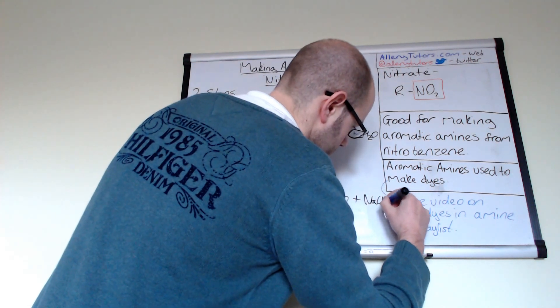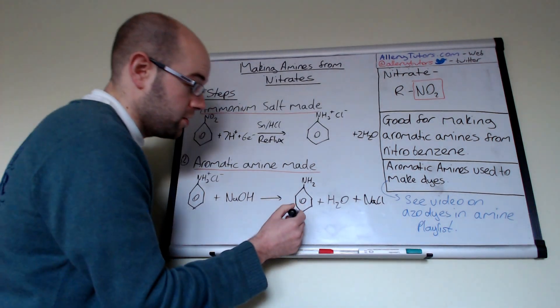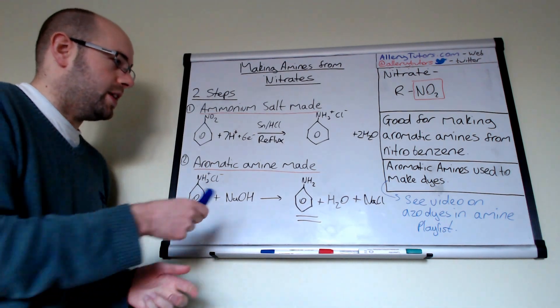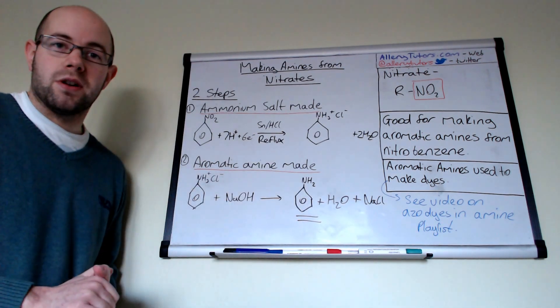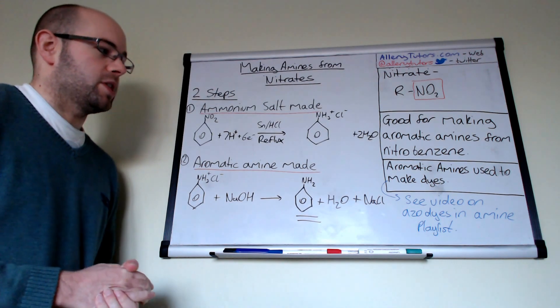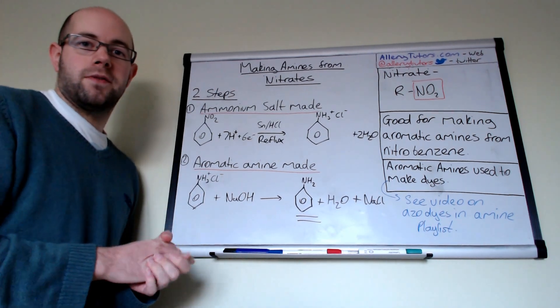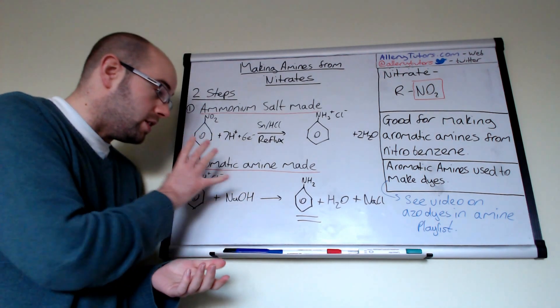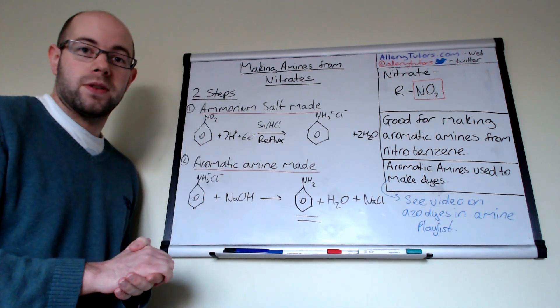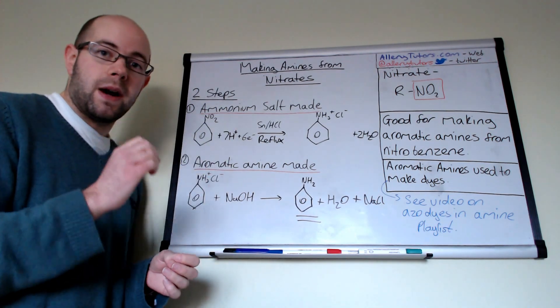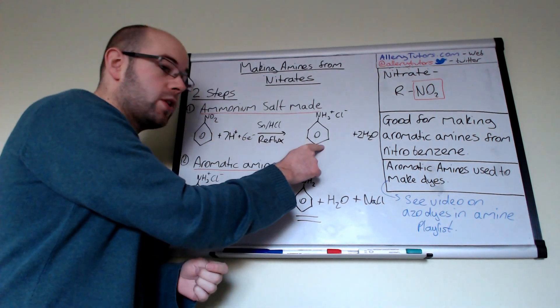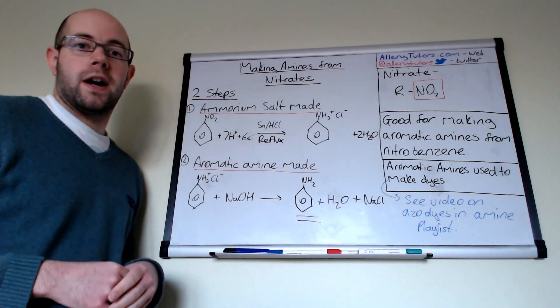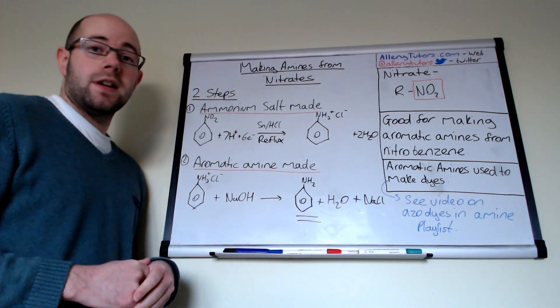And there is your phenylamine, and you've made an aromatic amine. Like I say, these are very good for making azo dyes, and there will be a video on that as well, so just check out the playlist and you can find the video on azo dyes. But in effect, that's what it is. You need to know the reagents that are required for this reaction, you need to know what you react, and just be aware that you form a salt first, then you add sodium hydroxide later on to turn it into your phenylamine. But that's it, hope that helps, bye.